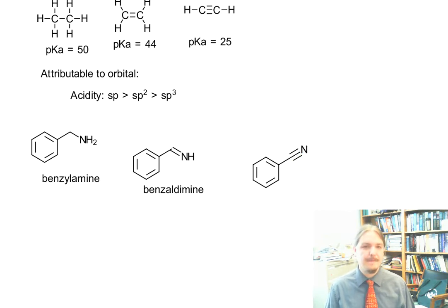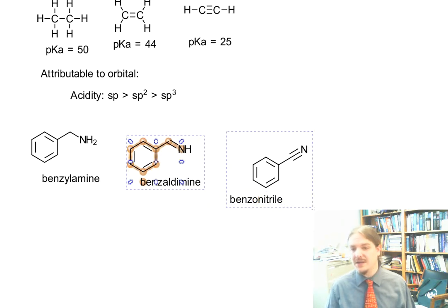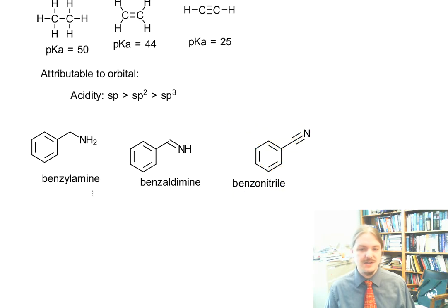Here is benzonitrile. Carbon-nitrogen single bond amine. Carbon-nitrogen double bond imine. Carbon-nitrogen triple bond nitrile. So because nitrogen can have up to three bonds, we can actually have an analogous situation: sp³, sp², sp hybridized.